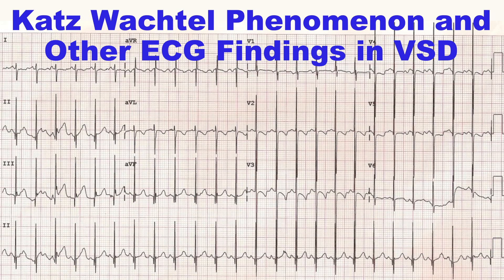Large anterior forces are due to the hypertrophied right ventricle, and late posterior forces are due to the hypertrophied left ventricle. In addition, this ECG shows negative QRS complexes in leads I and AVL, indicating right axis deviation, which is a feature of right ventricular hypertrophy.